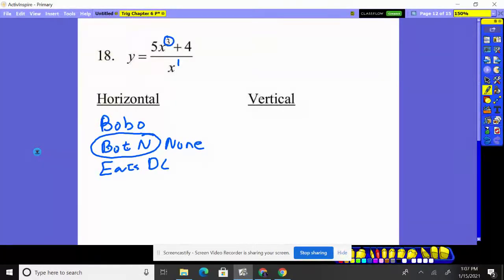Vertical. Vertical, we always look at the denominator to determine, hey, what can't X be? Because we've got to draw a line there so that you can't graph across it.